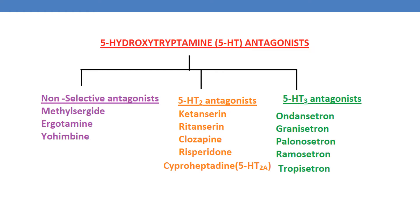Coming to 5-HT3 antagonists, they are ondansetron, granisetron, palonosetron, ramosetron, and tropisetron. They are mainly used as anti-emetic drugs. We will discuss about them in detail when we talk about anti-emetics.